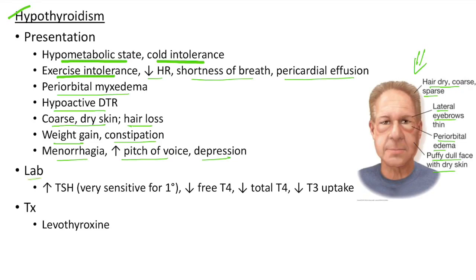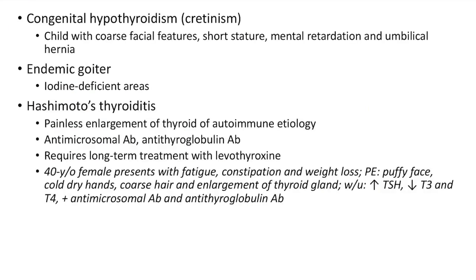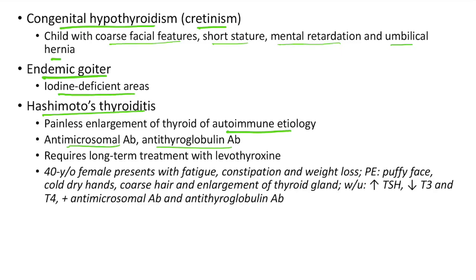Laboratory findings in hypothyroidism include elevated TSH, which is very sensitive for primary hypothyroidism, and low free T4, total T4 and T3 uptake. Hypothyroidism is treated with levothyroxine. Congenital hypothyroidism, also known as cretinism, presents as a child with coarse facial features, short stature, mental retardation and umbilical hernia. Endemic goiter is prevalent in iodine-deficient areas. Hashimoto's thyroiditis is painless enlargement of the thyroid of autoimmune etiology, with anti-microsomal antibody and anti-thyroglobulin antibody leading to hypothyroidism. Cases require long-term treatment with levothyroxine.